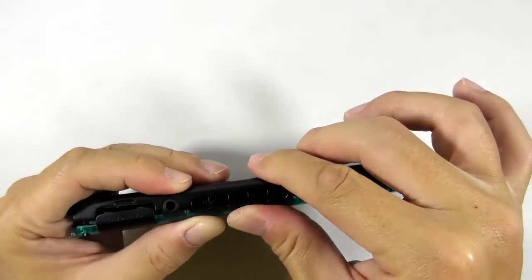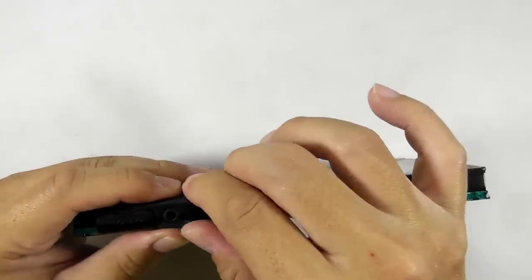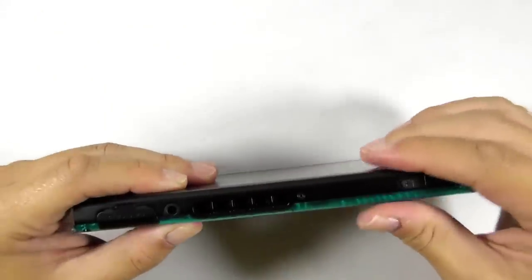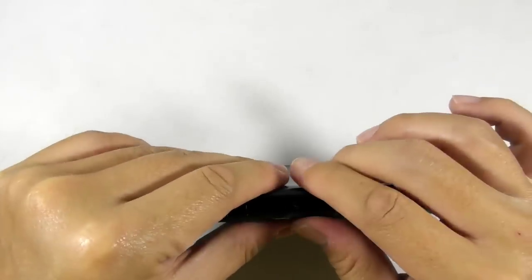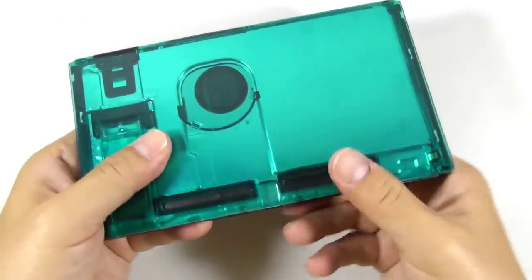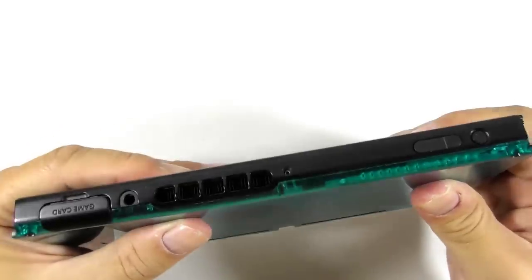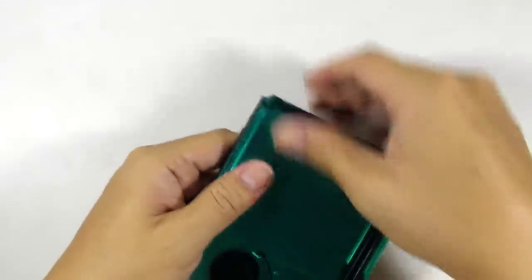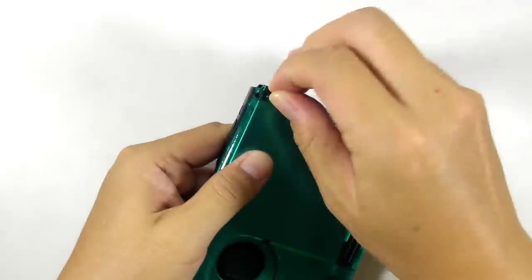Inspect all the sides and make sure it fits perfectly. Then install the tri-wing screws.